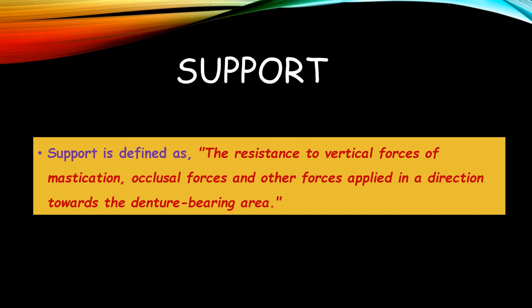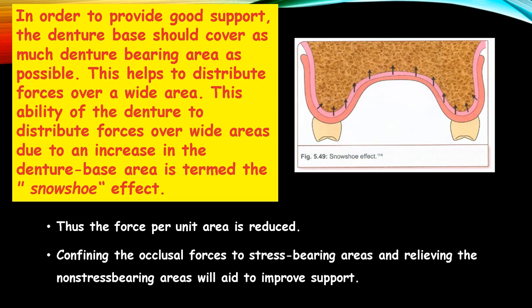Coming to the last objective, support: according to GPT9, support is defined as the resistance to vertical forces of mastication, occlusal forces, and other forces applied in a direction towards the denture-bearing area. To provide good support, the denture base should cover as much denture-bearing area as possible to distribute forces over a wide area. This ability is termed the snowshoe effect, as shown in the picture — the force per unit area is reduced. Confining occlusal forces to stress-bearing areas and relieving non-stress-bearing areas will aid to improve support.